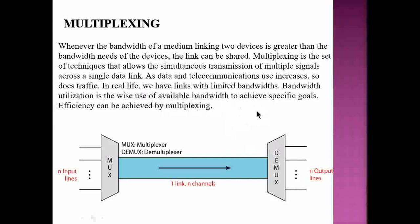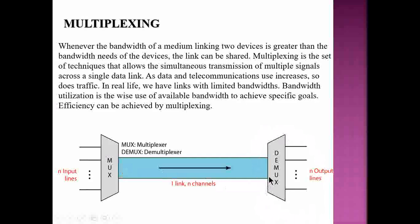As shown in the diagram, multiplexing has many input lines and many output lines. The multiplexer combines these input lines or signals into one channel. On the receiving side, there is a demultiplexer that splits this combined signal back into its respective channels.